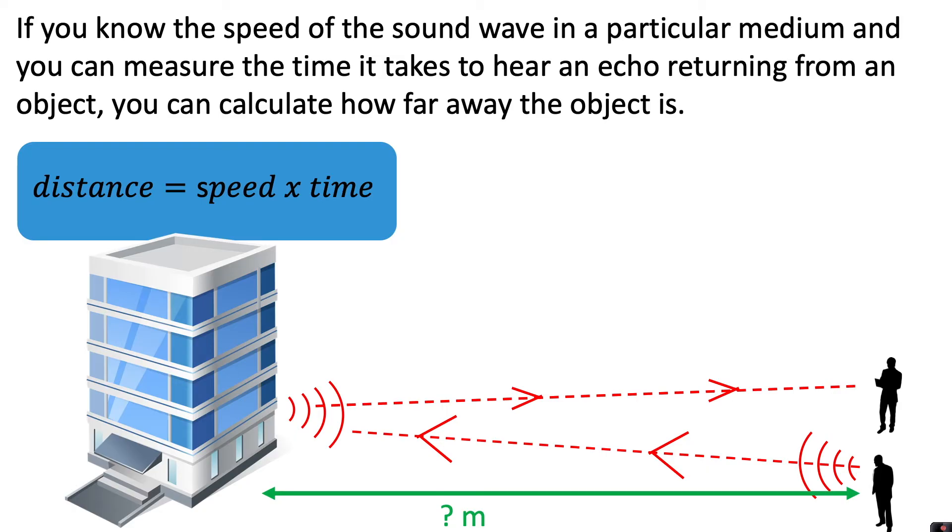Let's say that person B heard the echo within two seconds and we know that the speed of sound in air is 340 meters per second. We can use these two values—speed at 340 meters per second and time at two seconds—to calculate the distance between the people and the building. If we put these two numbers into our equation, we've got speed times time: 340 meters per second multiplied by 2 seconds, and that will give us a distance of 680 meters.